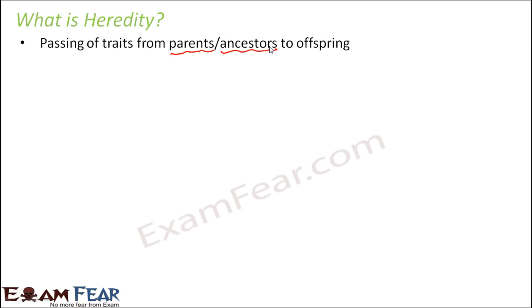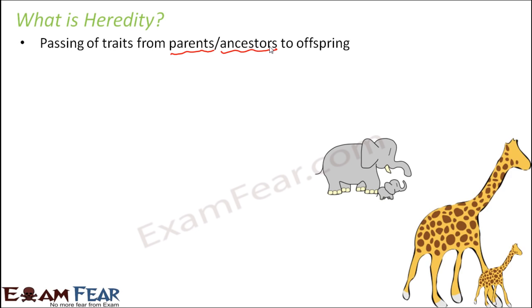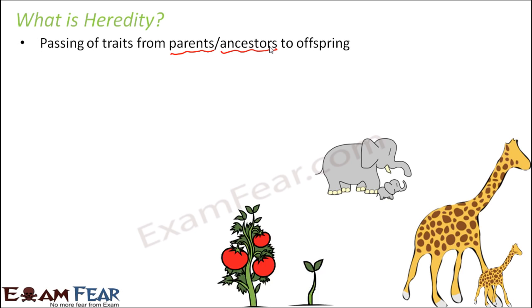The first thing that comes to mind when you talk about heredity is that the basic body design and structure has to resemble the parents. For example, if you talk about an elephant, the baby of an elephant always looks like an elephant — not like a giraffe. That is because the basic body design and structure has to resemble the parents. Similarly, a human baby looks like a human being. Different animals give birth to their young ones, and their young ones exactly resemble those kinds of animals at least in their basic structure and design.